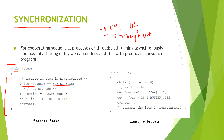Here, counter and buffer are two shared variables. These shared variables are running in both programs. You can also see the buffer array here. Since they are shared variables, they need to be taken care of in a special manner — and that is what we will discuss in synchronization.